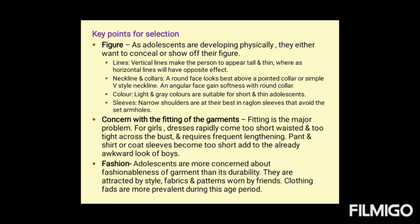Sleeves: narrow shoulders look best in raglan sleeves that avoid set-in armholes. Fitting is a major problem for girls, as dresses rapidly become too short and too tight across the bust. Pants and shirt or coat sleeves become too short for boys as well. Fashion: adolescents are more concerned about the fashionableness of a garment than its durability. They are attracted by the style, fabric, and patterns owned by friends. Clothing fads are more prevalent during adolescence.